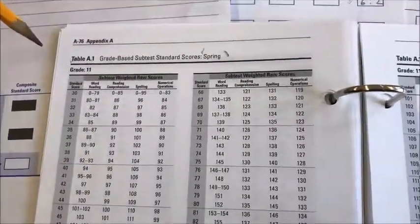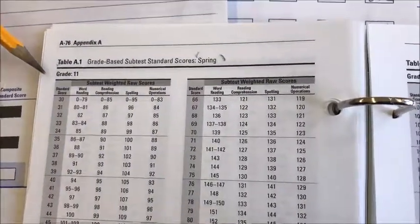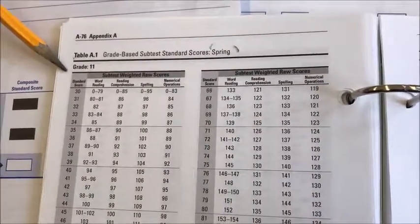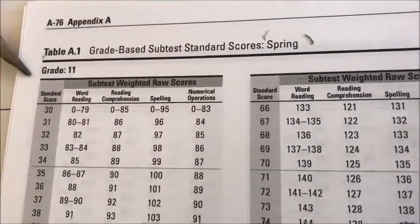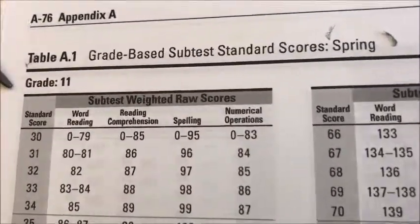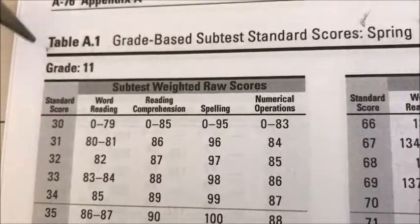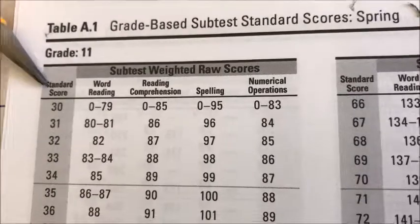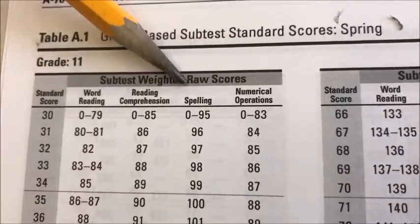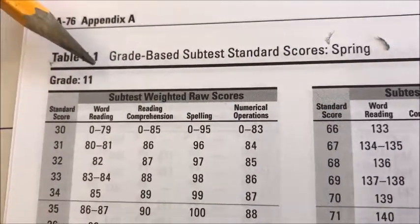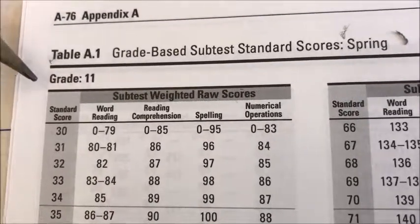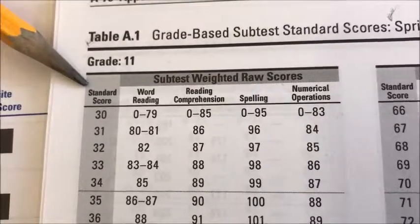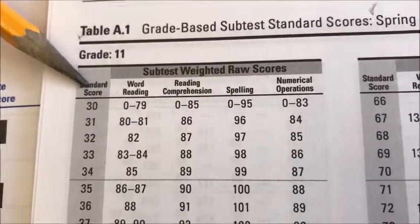This table is very similar in format to the grade equivalent table, but we're looking at different scores. Along the top you have subtest weighted raw scores — those are the scores we're working with — for word reading, reading comprehension, spelling, and numerical operations, just like the other table. And we're looking for the standard score, shown in the gray column on the left.